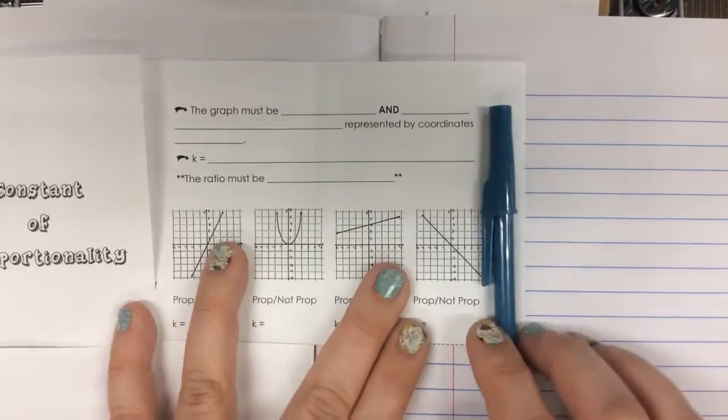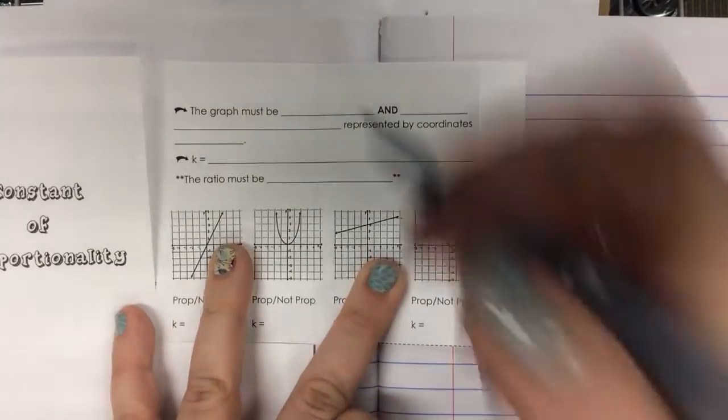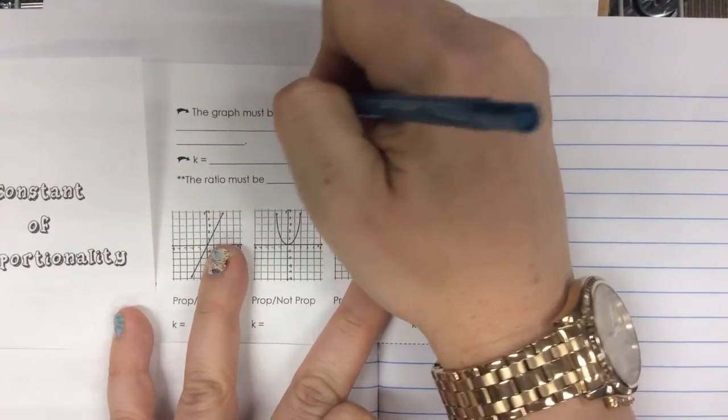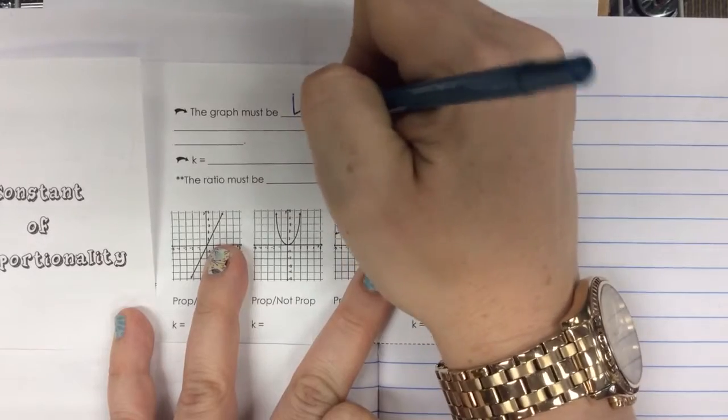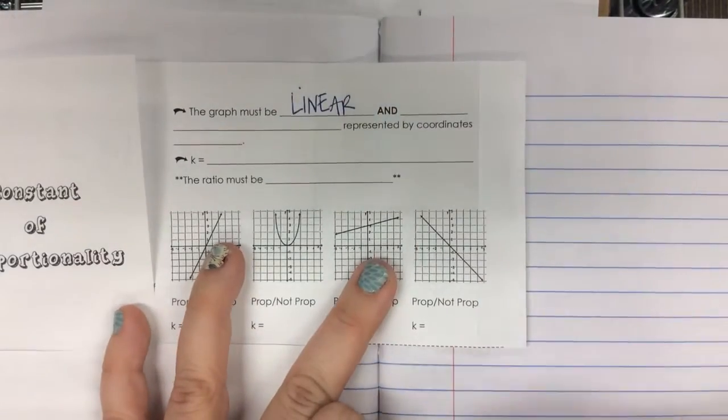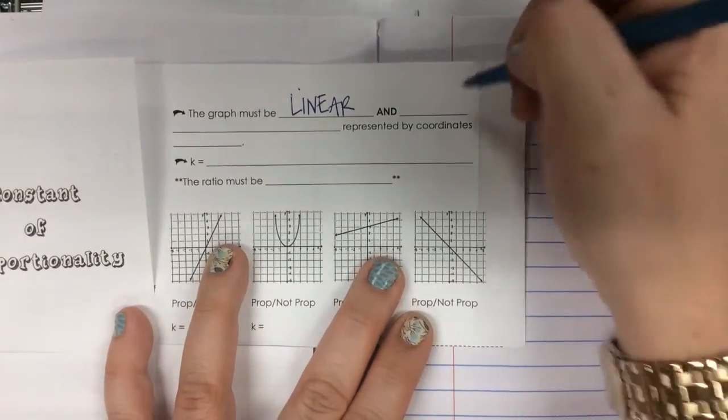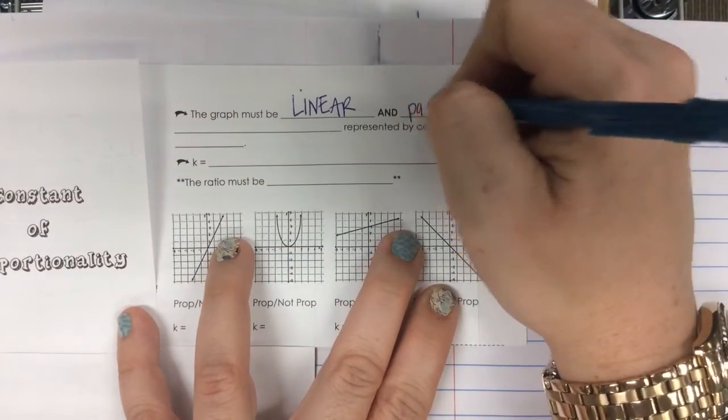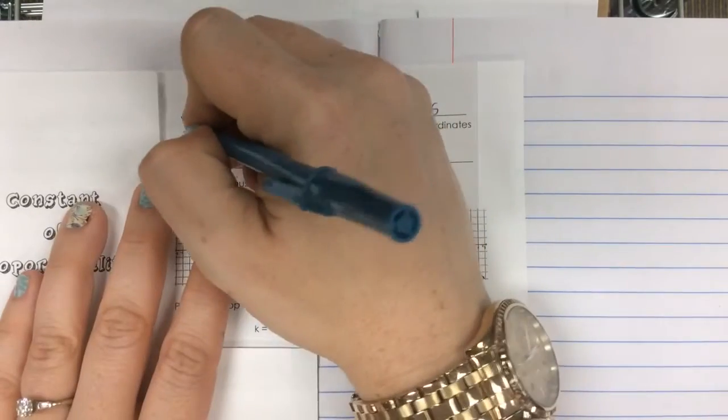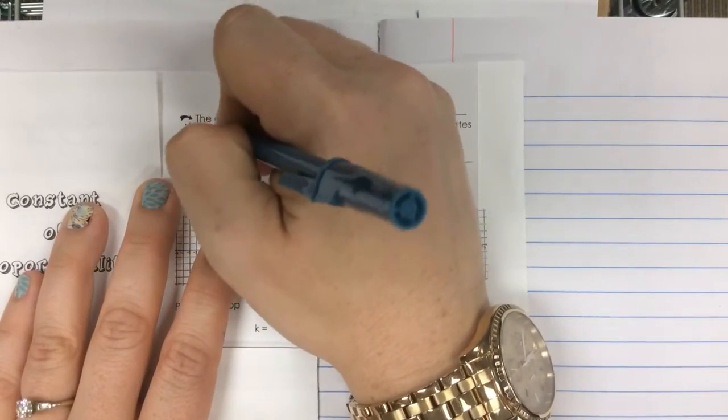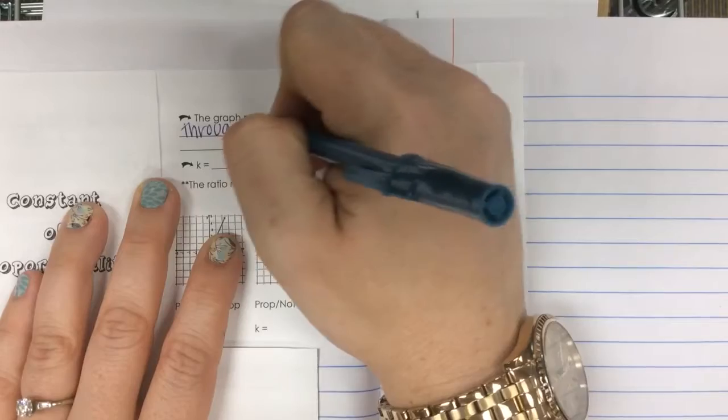A graph must be linear and pass through the origin.